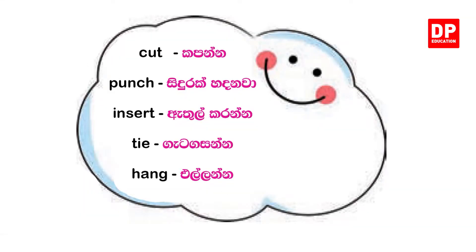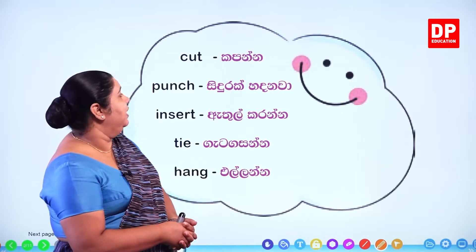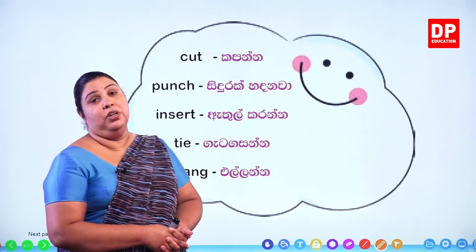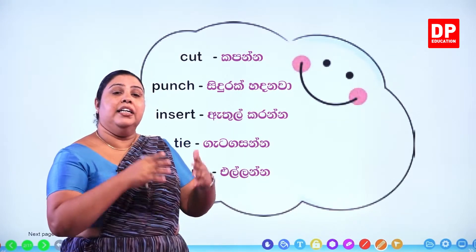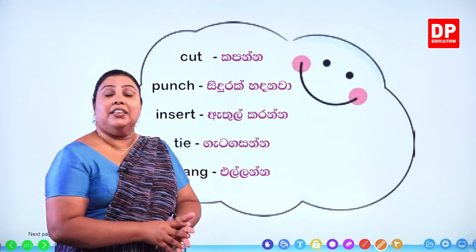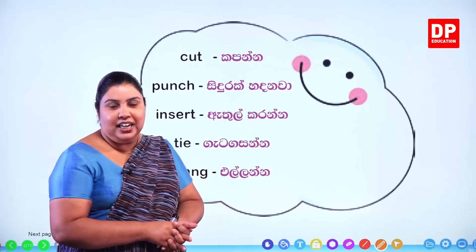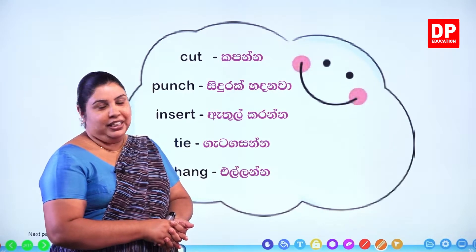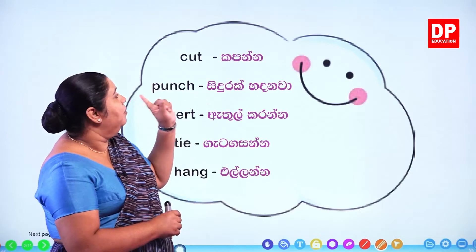Now this is your pupils book — the happy cloud. It's the happy cloud that we have in our pupils book. If you have special words, you can use the happy cloud. Now we are going to cut.